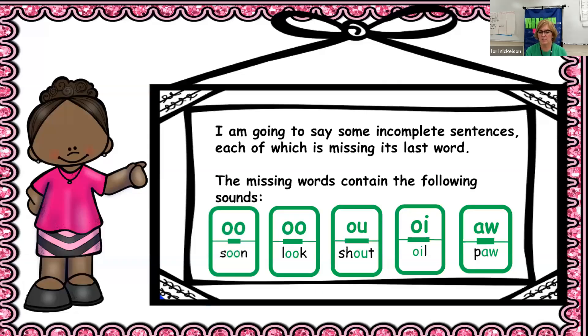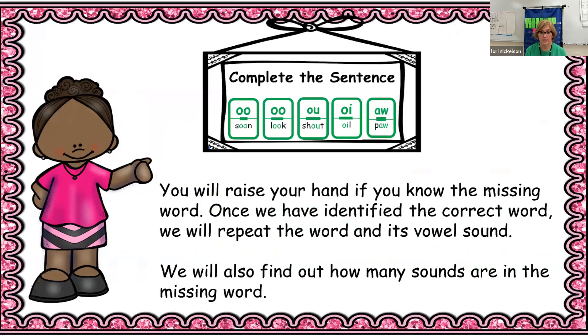So I'm going to say some incomplete sentences, each of which is missing its last word. The missing words contain the following sounds: O-U, O-O, oil, or ah. So you will raise your hand if you know the missing word. Once we've identified the correct word, we will repeat the word and its vowel sound. We will also find out how many sounds are in the missing word.